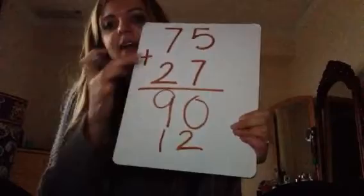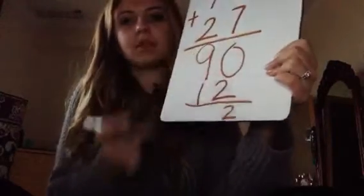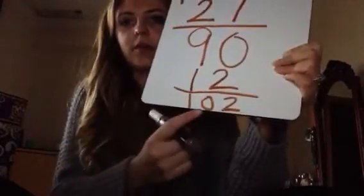Okay, now that I've added my tens and my ones, I'm going to add them together. So what is 0 plus 2? 2. 9 plus 1 equals 10. My answer is 102.